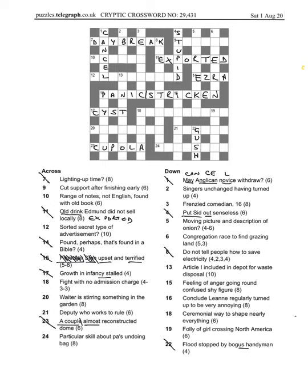And eight down, do not tell people. A way to save electricity is to keep in the dark, don't have your lights on and save electricity. And obviously that means if you keep someone in the dark you don't tell them something. 20 across, waiter is stirring, so an anagram of waiter. It's going to end in A if we're looking at it. It's something in the garden and that something is the plant wisteria.